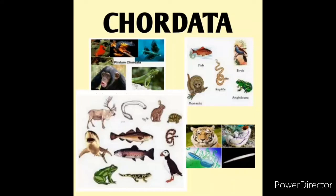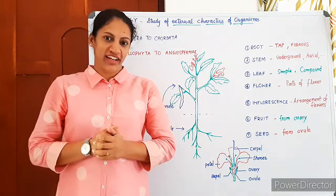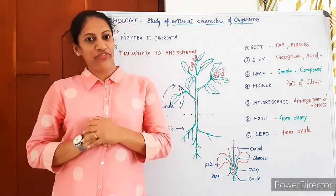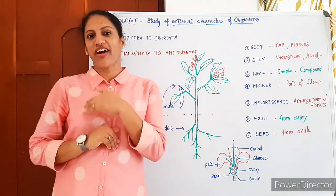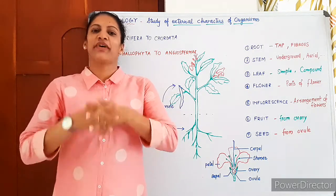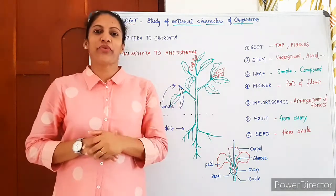Chordata consists of numerous classes and all members show different morphology, which you can study better in separate classes. With a number of examples, every phylum's morphology and all characteristics we are going to study in the Animal Kingdom chapter in Plus 1. Now let's come to plant morphology.